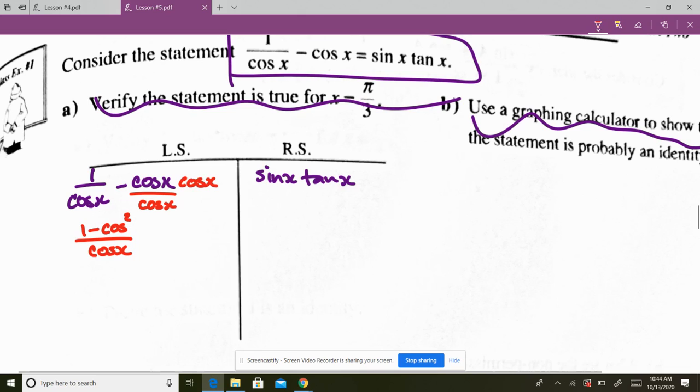We have one fraction. We have a 1 and we have a trig function squared. What should be going off in your head right now? Where do you look on your formula sheet? Pythagorean identities. So what's 1 minus cos squared? Sine squared. So now it becomes sine squared x over cos of x.